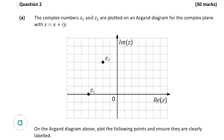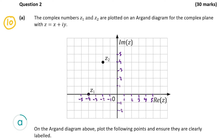Part a of the question is worth 10 marks, and we're given two complex numbers z1 and z2 plotted on an Argand diagram for the complex plane. Remember, on an Argand diagram the y-axis is the imaginary axis and the x-axis is the real axis. I'm going to mark in numbers on our diagram to help us, and I recommend you do this too as it'll make the question a bit easier.